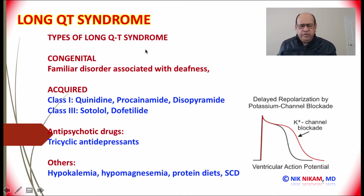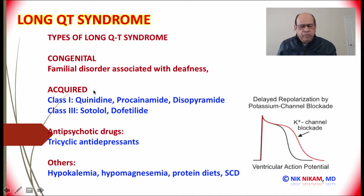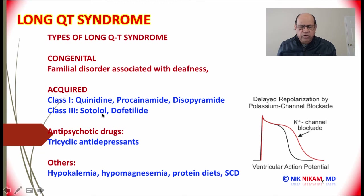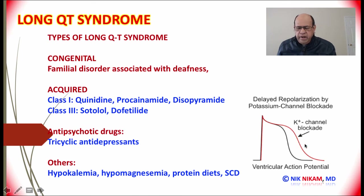There are two main etiologies. The first one is congenital — it is a familial disorder associated with neurosensory deafness. The acquired ones are mostly related to anti-arrhythmic drugs which prolong the refractory period of phase 3 of the action potential, namely class 1 drugs which include quinidine, procainamide, and disopyramide, and class 3 drugs which prolong the refractory period such as sotalol and dofetilide. Anti-psychotic drugs such as tricyclic antidepressants have also been shown to prolong the refractory period and thus increase the QT interval. Other causes include hypokalemia, protein diets, and sudden infant cardiac death.